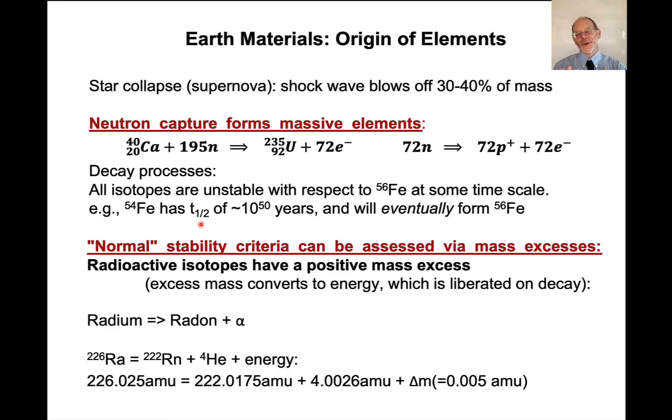Now, this is not normal, right? I mean, this is way, way beyond the age of the universe. So one of the ways that we evaluate stability of isotopes, are they stable or are they unstable or they radioactive? Normally, these stability criteria can be assessed via something that we call the mass excess. And basically what this comes down to, where I'm going with all of this, is that radioactive isotopes have a positive mass excess. And it's this positive mass excess that converts to energy that is liberated during decay.